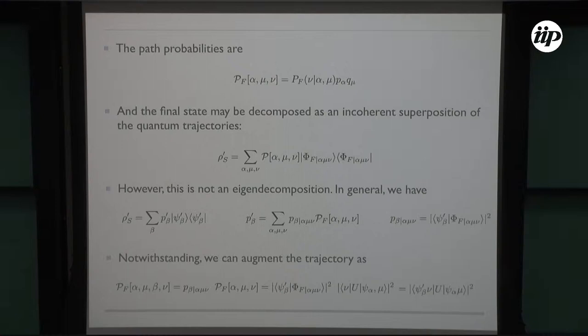Now that you have this, you can talk about the path probability as just being given by these three numbers: the conditional probability of initially finding system and bath in their states, then finding the bath in the final state, times the initial probabilities. From this you can reconstruct the state of the system as a sum over all trajectories, so the final state is a sum over all possible conditional states with path probabilities.